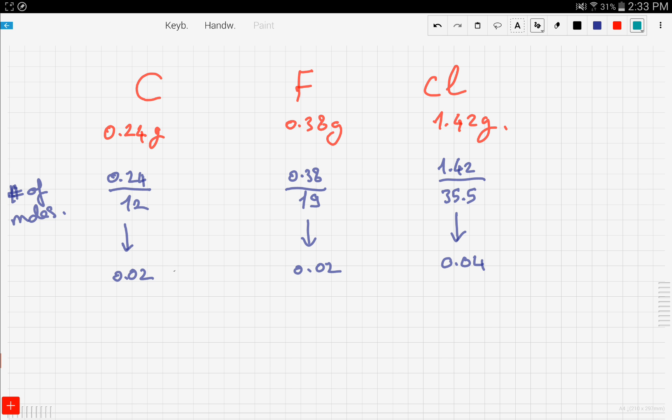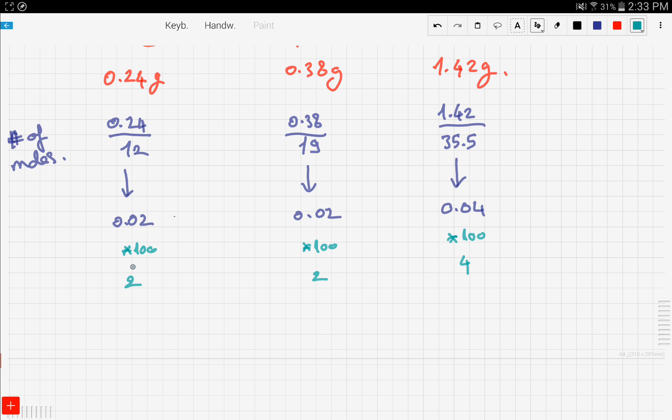We can't have decimals in the number of moles, we have to make those numbers whole. So we multiply by 100 to get 2, 2, and 4. Now simplify by dividing by the common factor which is 2.